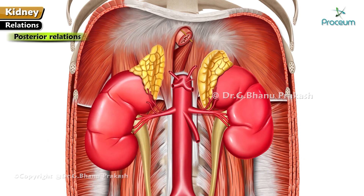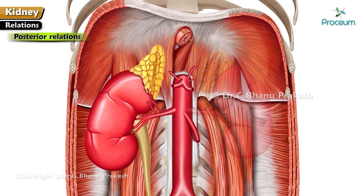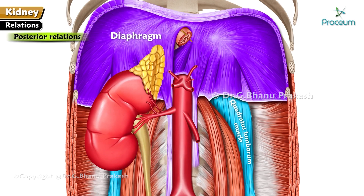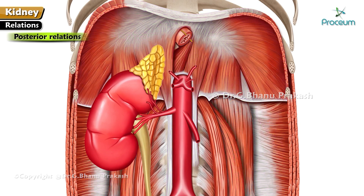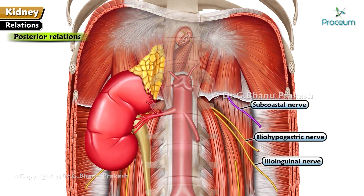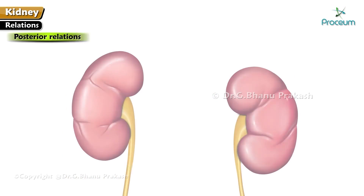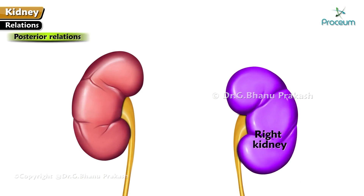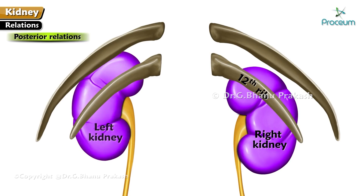Posterior relations of both kidneys are the same except in relation to ribs. Four muscles: diaphragm, quadratus lumborum, psoas major, and transversus abdominis. Three nerves: subcostal T12, iliohypogastric L1, and ilioinguinal L1. The right kidney is related to the twelfth rib, whereas the left kidney is related to the eleventh and twelfth ribs.